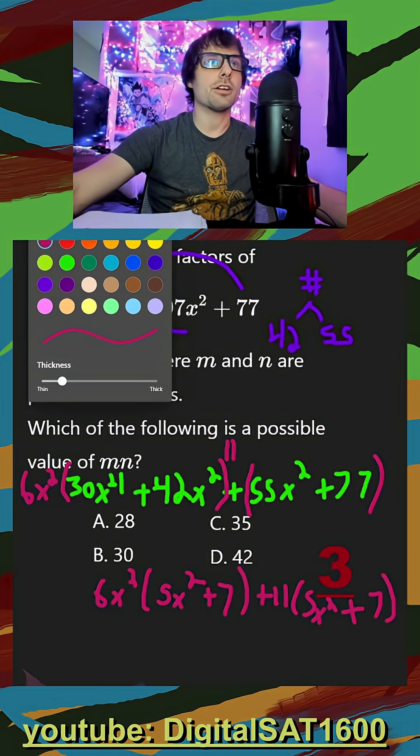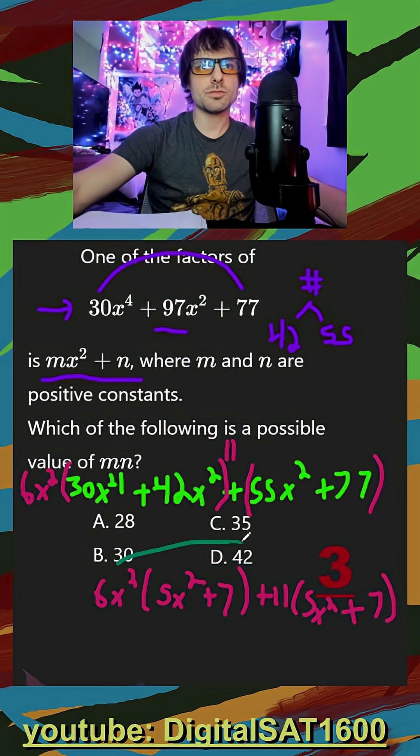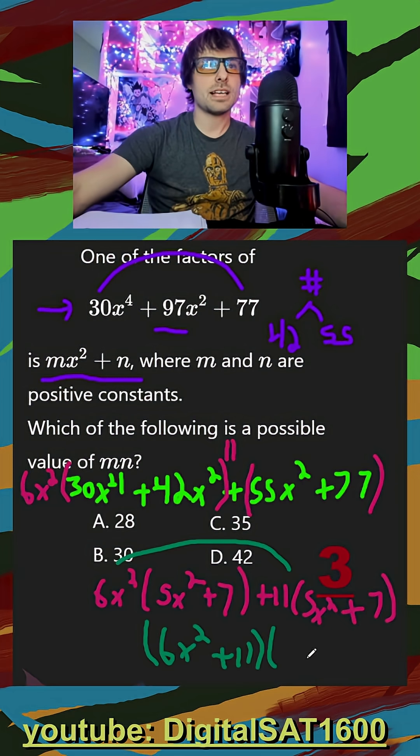So it worked. Our final form down below is, we pair these two together, (6x² + 11)(5x² + 7).